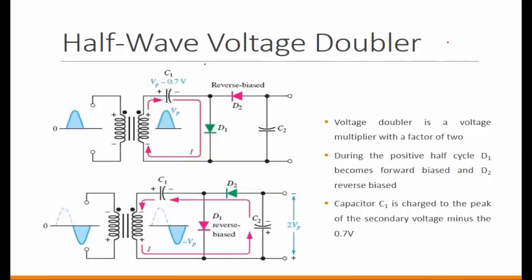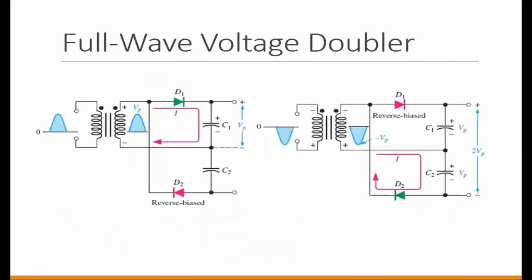Discharges in the other cycle. Yeah, it's usually when the diode forward biases, the capacitor will charge, and when it is reverse biased, it will discharge. And we can keep on extending these to triplers.